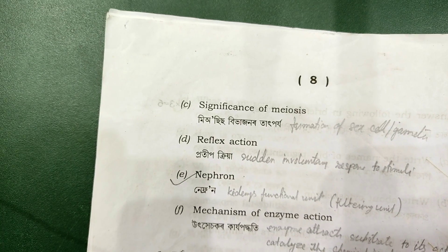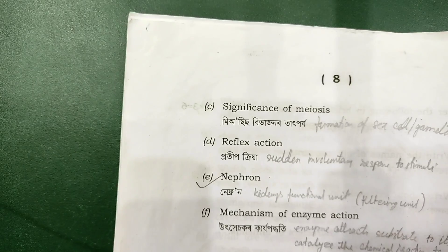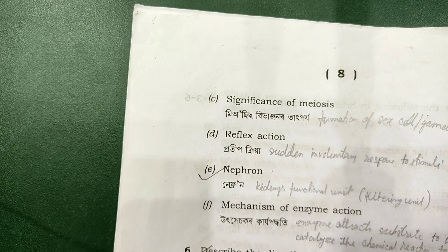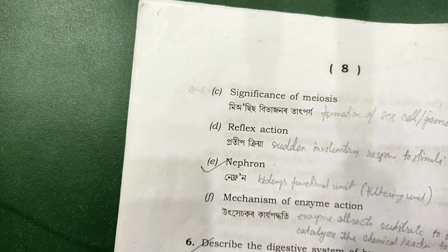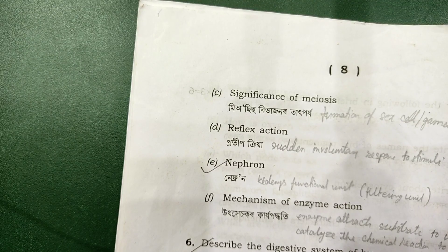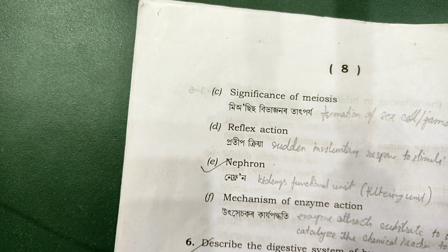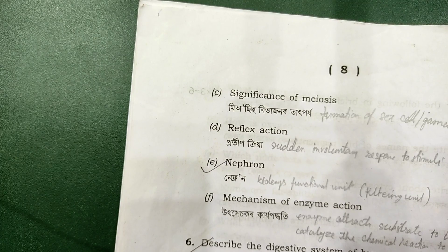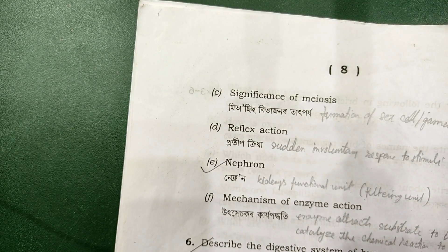Next: nucleus — nuclear material includes DNA, RNA, nuclear membrane, and nucleoplasm. Next: significance of meiosis — it is the formation of sex cells and gametes. Next: reflex action — it is a sudden involuntary response to a stimulus.